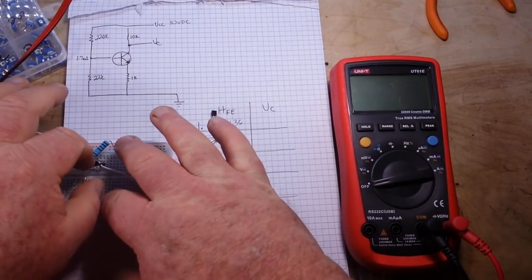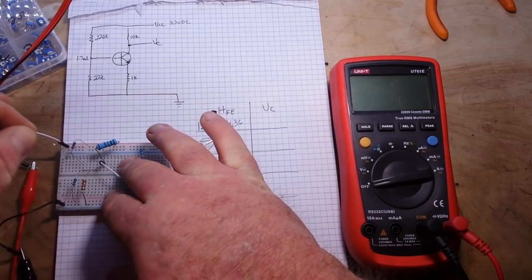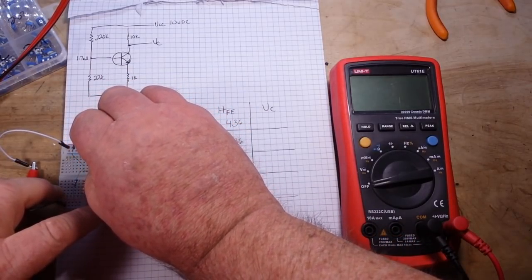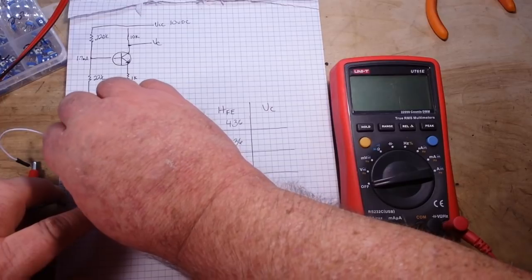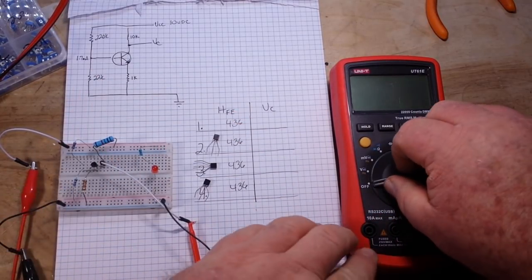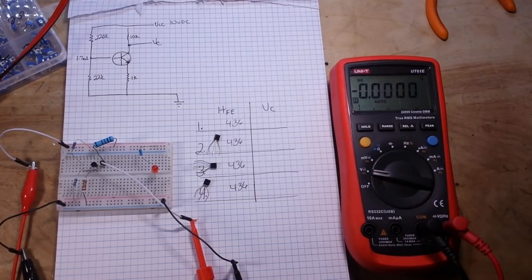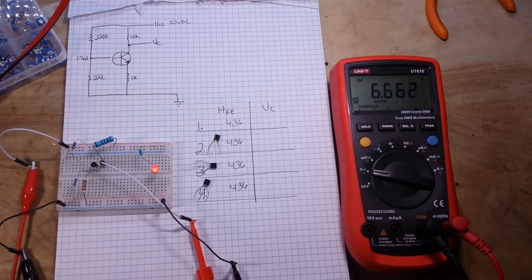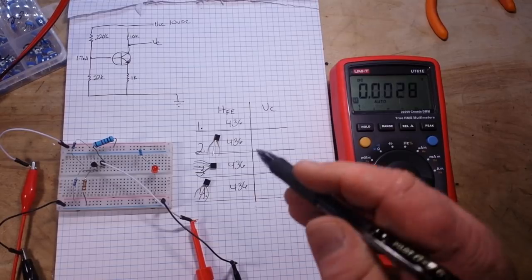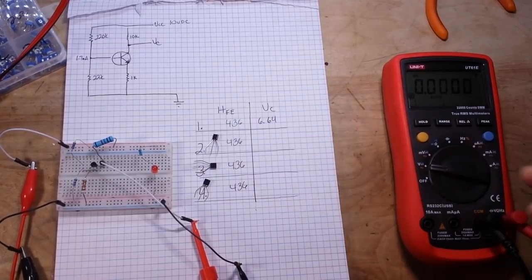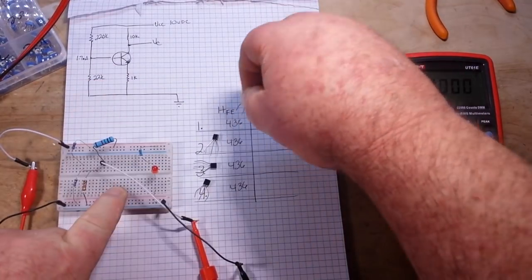Anyway, we're going to pull out this one and we're going to put in number one. Remember we've already tested the HFE on all these guys. Let's bring up the volts for collector voltage and power up the circuit. Six point six four is what I'm going to call it. Six point six four.